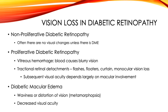Lastly, I want to talk about vision loss in diabetic retinopathy. However, as I mentioned before, the early stages of disease are often asymptomatic. If the disease progresses to proliferative diabetic retinopathy, patients with vitreous hemorrhages can have blurry vision. Patients with tractional retinal detachments can develop the classic symptoms of flashes, floaters, a falling curtain, and/or complete monocular vision loss.